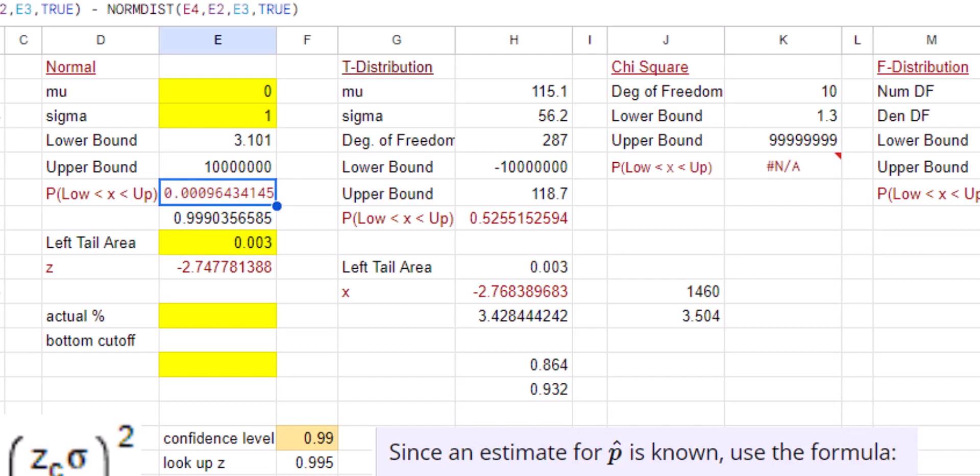This one wanted rounded to, I think three, four decimal places, I think three decimal places, so 0.001.